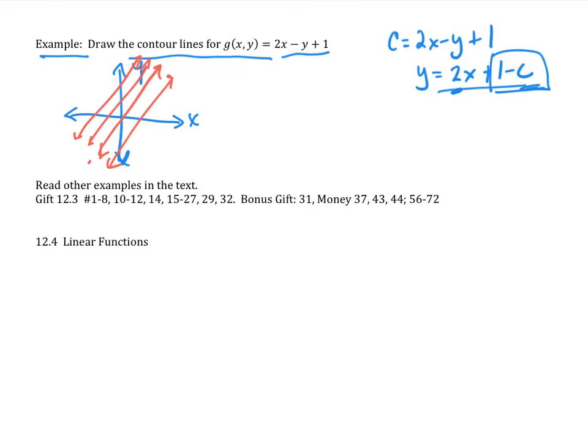So for instance, this would be a C value of 1 because 1 minus 1 gives me 0, so that's going to be my y-intercept.